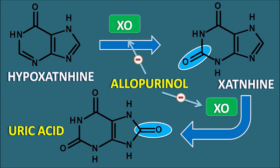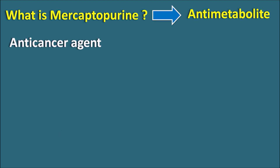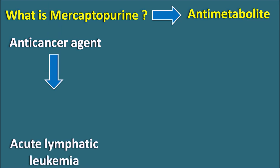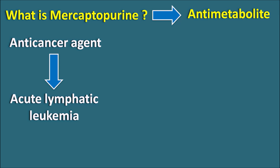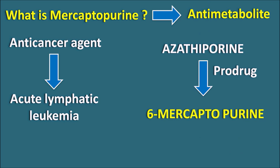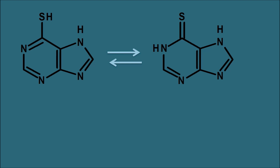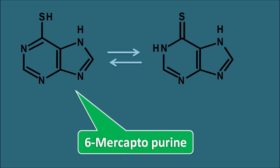Now let us see how allopurinol interacts with the second drug, mercaptopurine. What is mercaptopurine? Within the name we can observe 'purine,' so it is a purine analog, and this drug acts as an anti-metabolite. Mercaptopurine acts as a false purine analog which can inhibit the de novo synthesis of purines, thereby interfering with nucleic acid synthesis. This drug acts as an anti-cancer agent and is used particularly in the treatment of acute lymphatic leukemia. Another related drug is azathioprine, which is a prodrug that can be converted into mercaptopurine. So azathioprine is a prodrug of 6-mercaptopurine. The structure of 6-mercaptopurine contains a sulfur present as a thiol group at the sixth position, hence it is called 6-mercaptopurine.